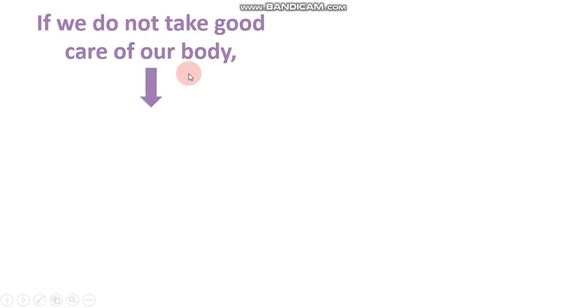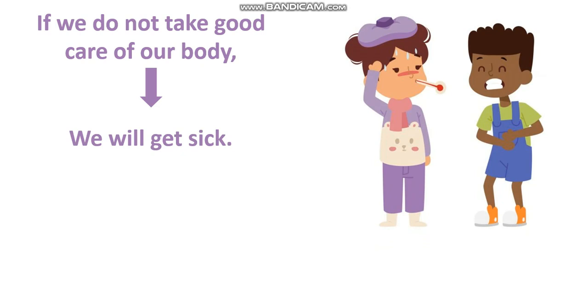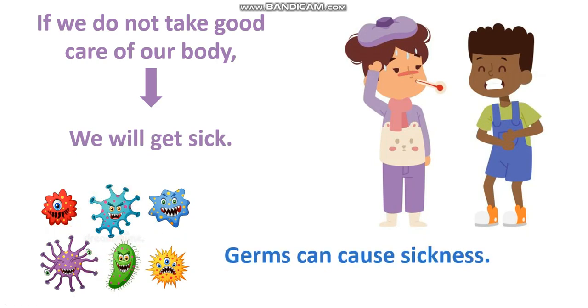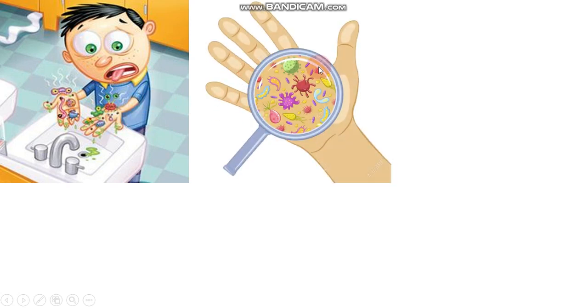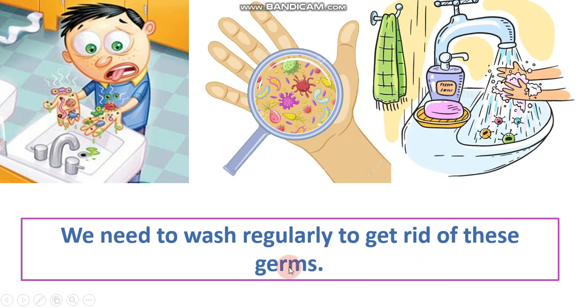So what happens if we do not take good care of our body? We will get sick, like these kids. Do you know why? Because we will have germs. Germs can cause sickness. Where do we get germs? We get them from not cleaning properly. If you do not clean your hands properly you will get germs on your hands — you cannot see them with your naked eye, but they are there. To get rid of them you should wash regularly, because these germs cause sickness.